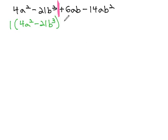On the right side, we do have a GCF of positive, using the sign from the middle, 2ab. When we factor out 2ab, we're left with 3 minus 7b.